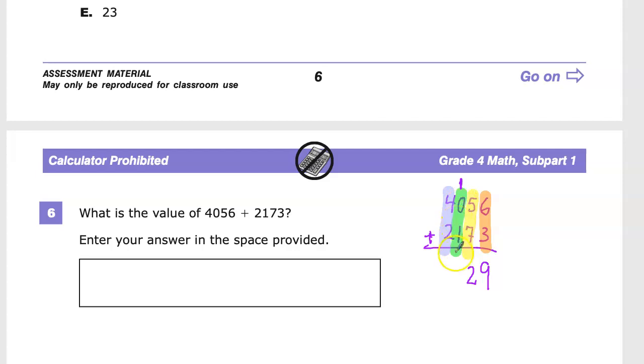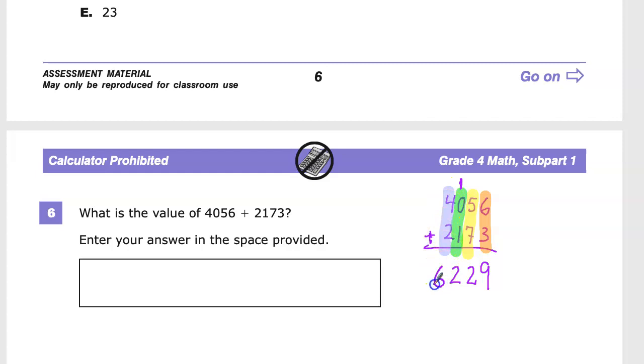And then I do 1 plus 0 plus 1, and I get 2. And then 4 plus 2 is, of course, 6. So my final answer for number 6 is 6, 2, 2, 9.